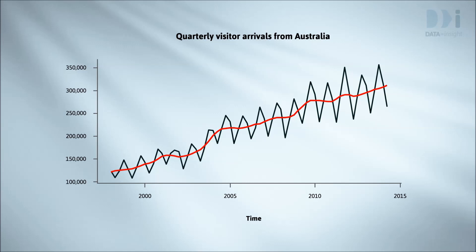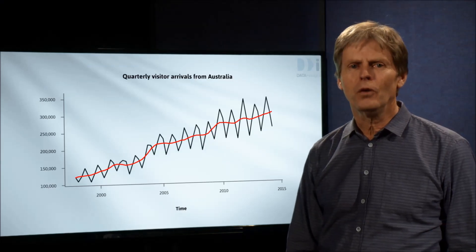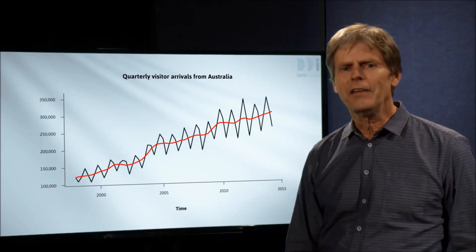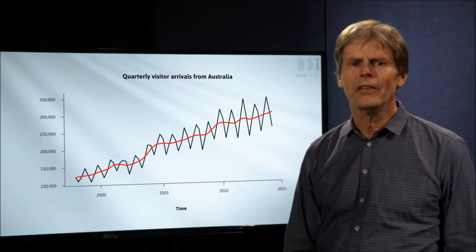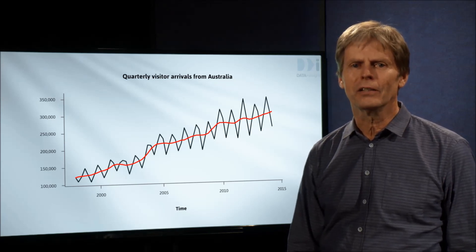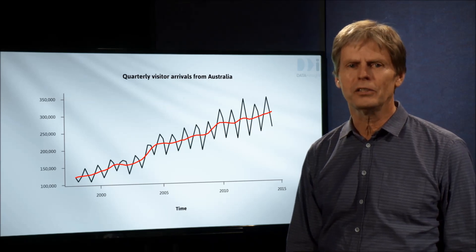The swings being bigger when the trend is higher is an extremely common pattern, present in all the series in this data set. Multiplicative decompositions often work well with series that look like this. Instead of thinking of the seasonal swings adding to the trend, they multiply the trend value — this is a multiplicative model and we get a multiplicative decomposition.